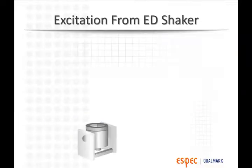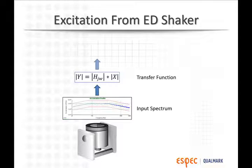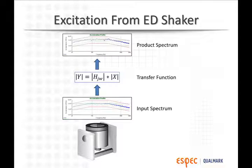When using an ED shaker, the table vibration is the only mechanical stress delivered to the product. The final excitation to the product is the tabletop vibration, filtered by the fixture and product transfer function.